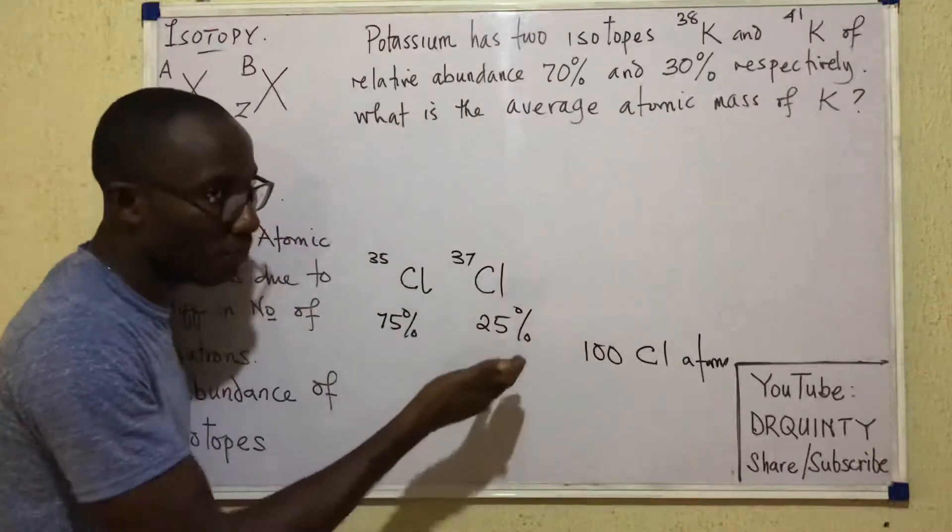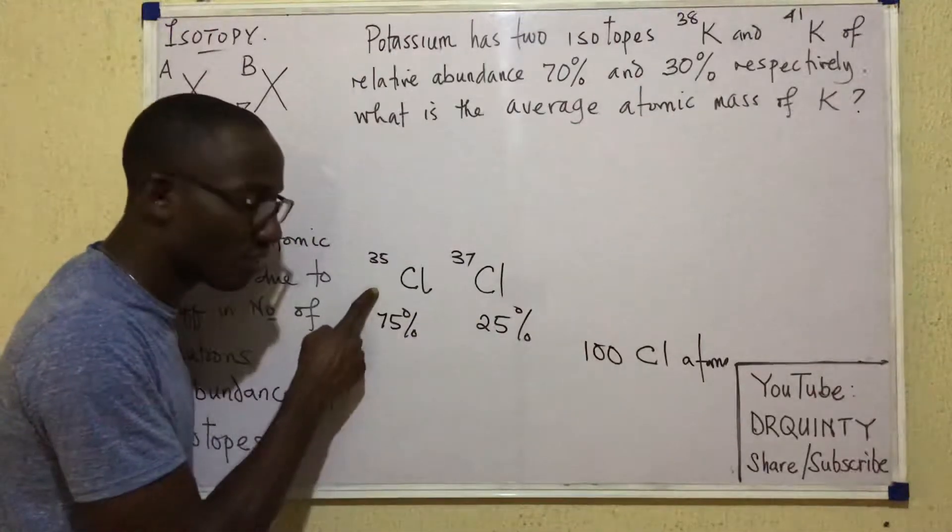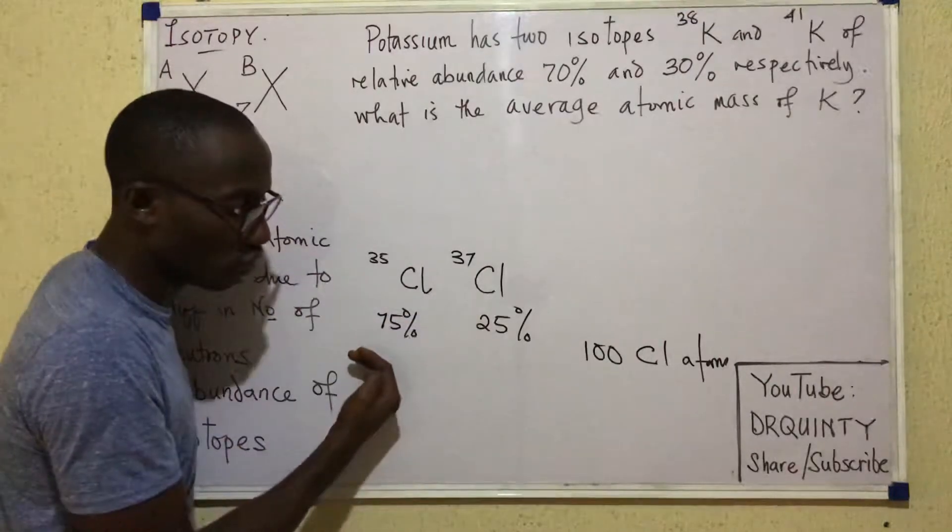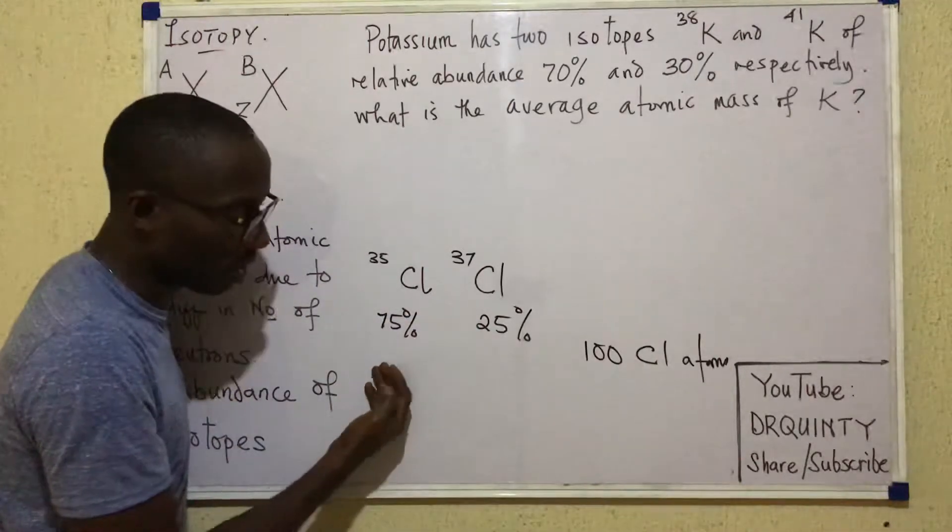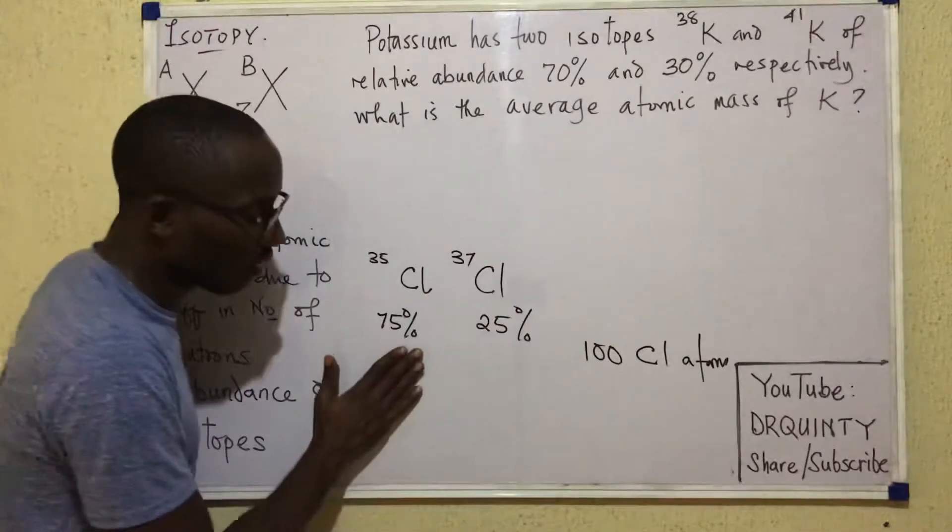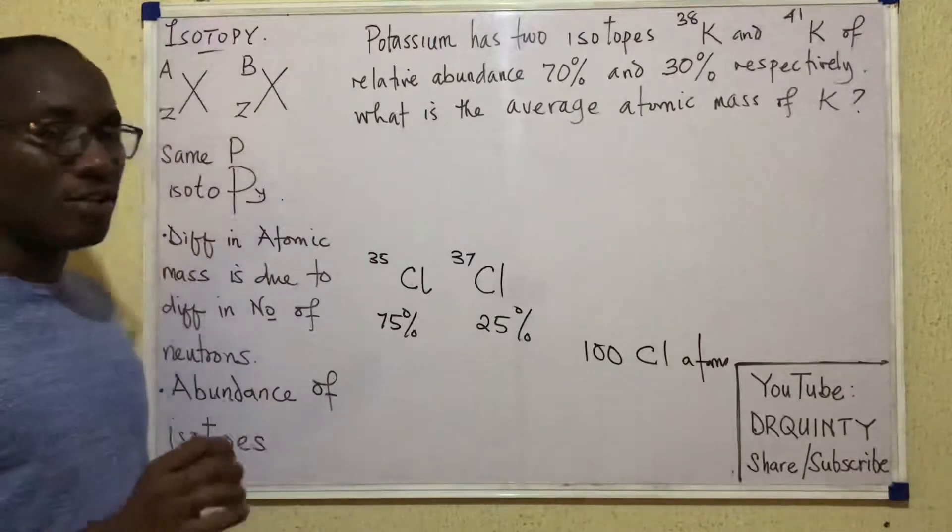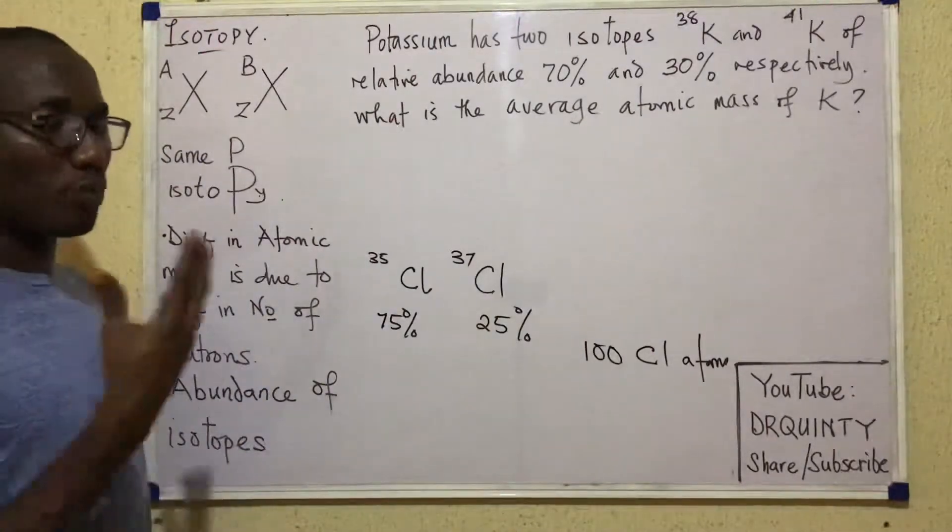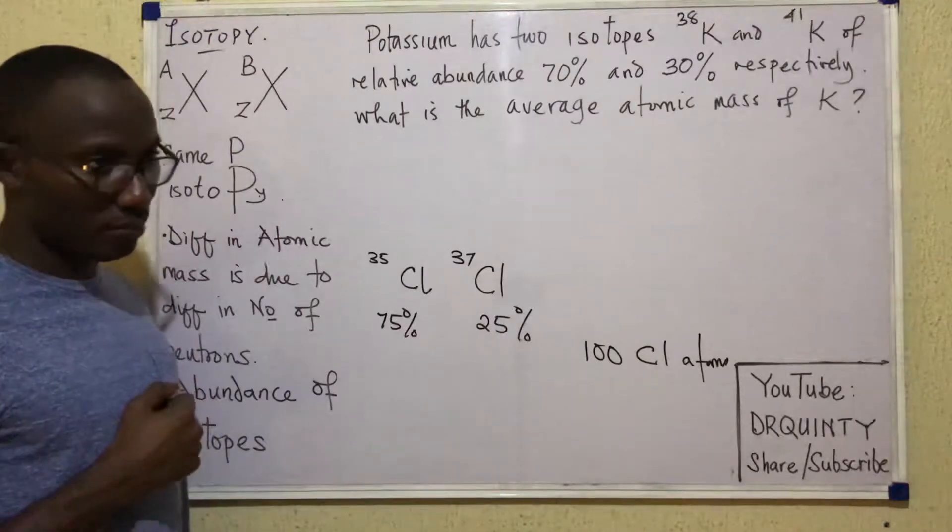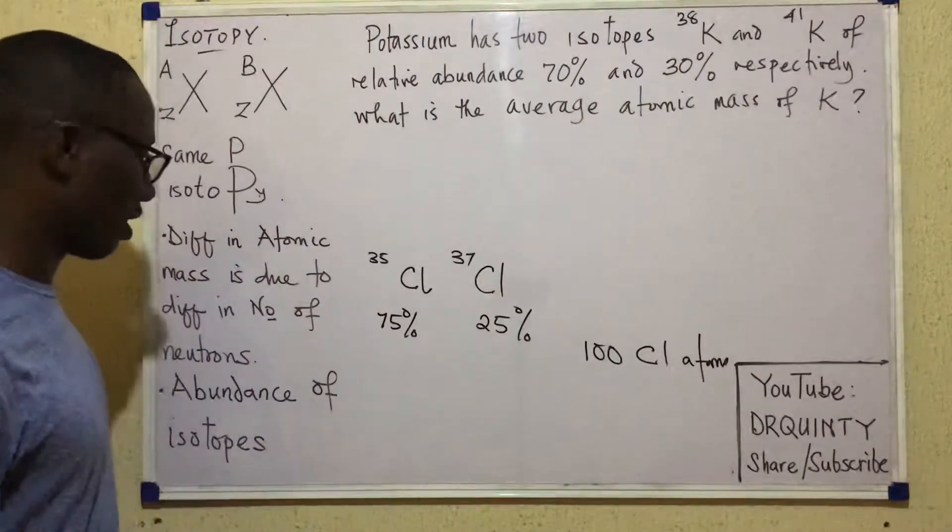So in terms of how they occur in nature, this type of Chlorine occurs more. It has a greater abundance. The natural abundance of this isotope is greater than that one is. So that's usually in the ratio of approximately 3 is to 1, 75 is to 25. So when you are given abundances like this, they tell you which of the isotopes predominates in any sample of the substance that you take.